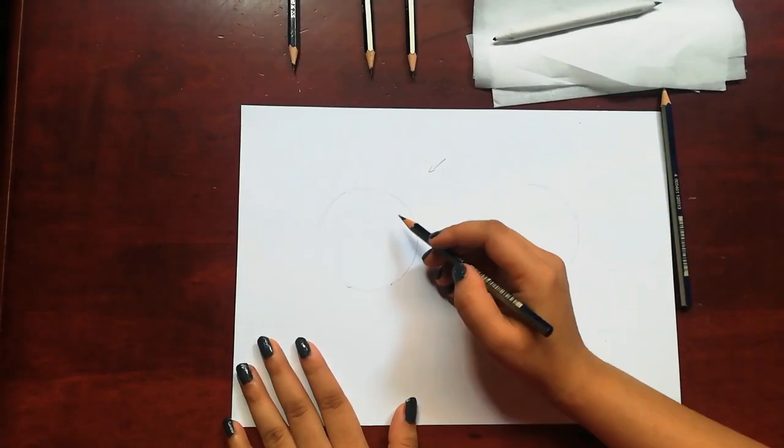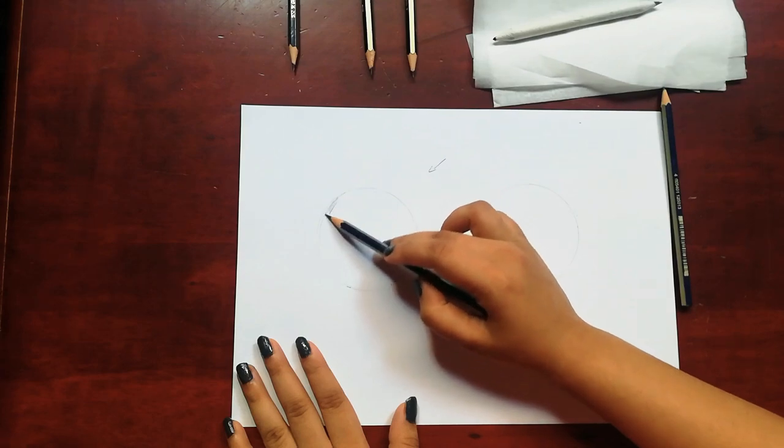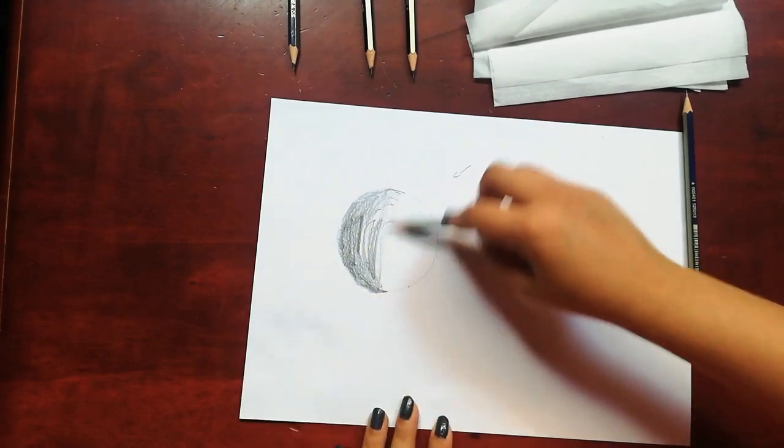Here I'm using a blending stump to blend. It's always really hard for me to blend with the blending stump. I always prefer tissue paper.